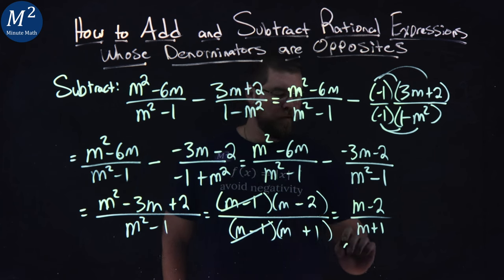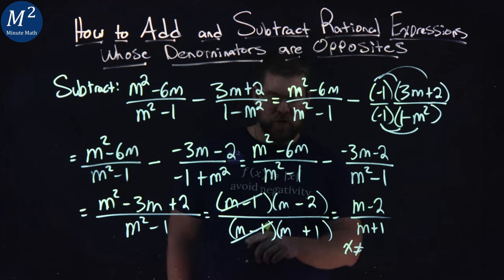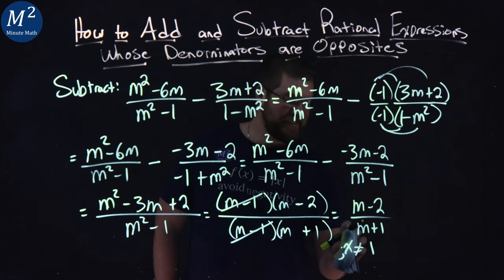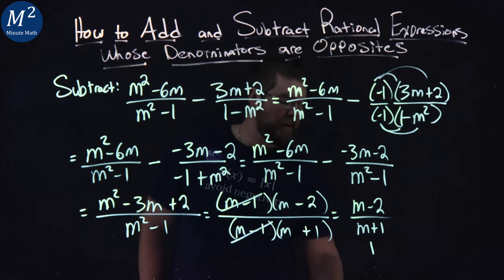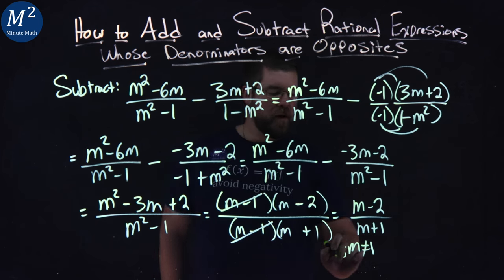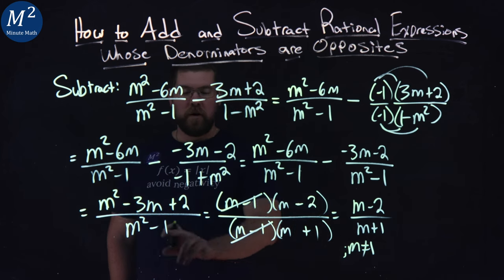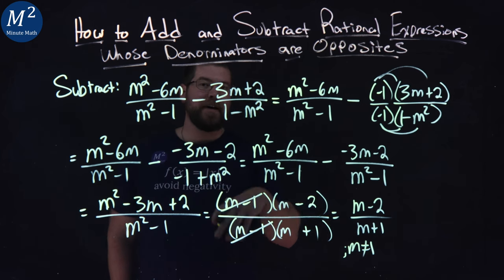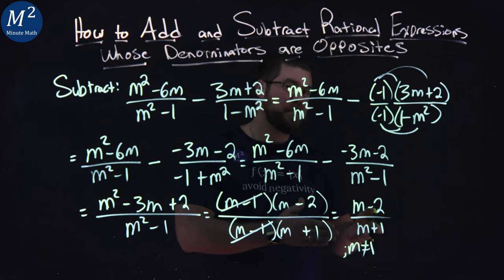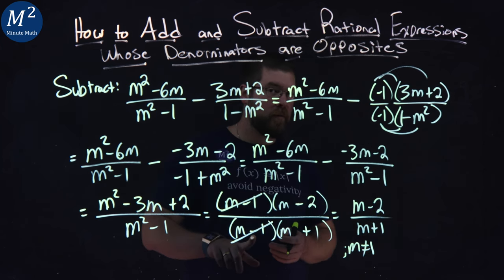But we want to note here something that m cannot equal positive 1. Why is that? Well, if m equals, or m, not x. See, I always do that. m cannot equal positive 1 here, because if it was 1 in the denominator, it would be 0. It would be undefined there. But that information isn't conveyed when we simplify, because we cancel out that part that would cause that. So we need to make sure we state that.